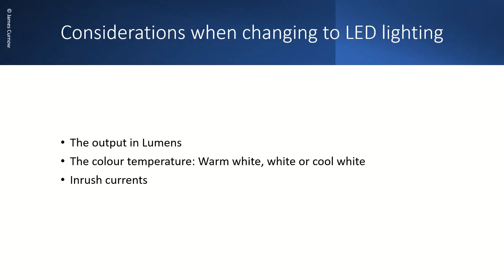Before changing to LED lighting, there are some considerations that we need to take into account. Firstly, the lighting output in lumens. Secondly, the colour temperature for the lamps, such as warm white, white, or cool white — I would suggest warm white for a home and white or cool white for commercial installations. Also bear in mind that LED lighting can produce inrush currents which can be accumulative, so even though the LED lamps use less energy overall, it is necessary to install enough circuits to ensure that inrush currents don't cause unwanted tripping.